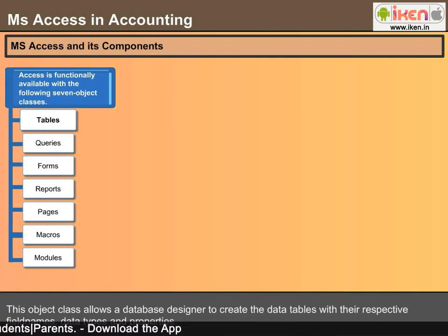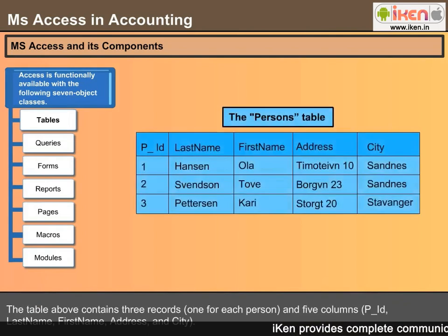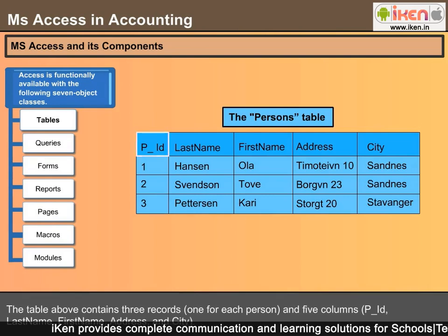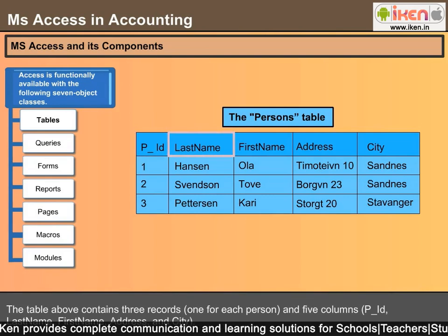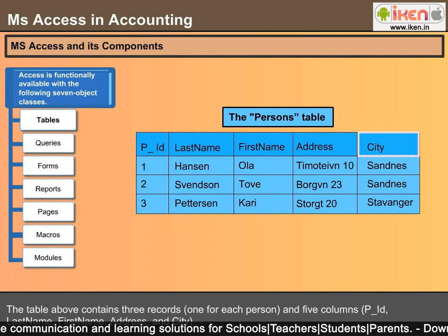Tables: This object class allows a database designer to create data tables with their respective field names, data types, and properties. Here is an example of a table named Persons. The table contains three records, one for each person, and five columns: ID, Last Name, First Name, Address, and City.